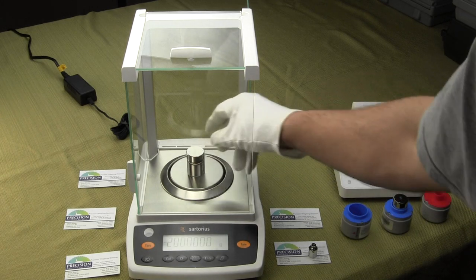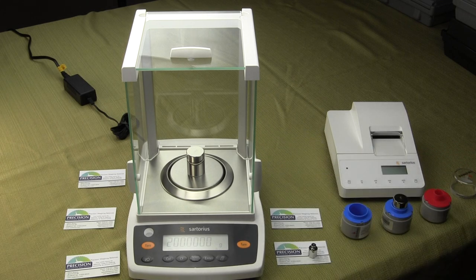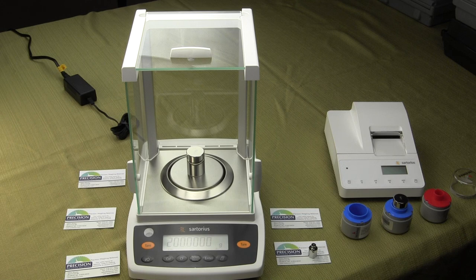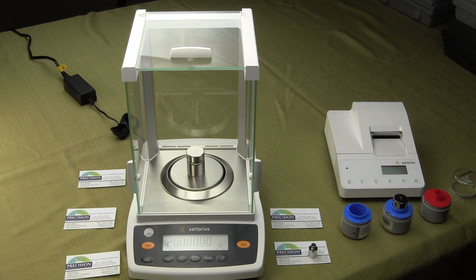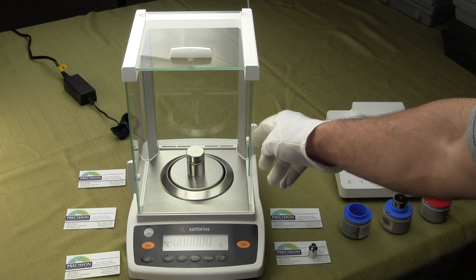You always want to wear a glove so that oil from your fingers does not touch the weight and change the tolerance. You also always want to close the door. You'll notice the balance says 200, CAL is in the lower left-hand corner. In a minute, the balance will confirm the calibration. It says CAL N, calibration is complete. That's how simple it is to do a calibration on this balance.